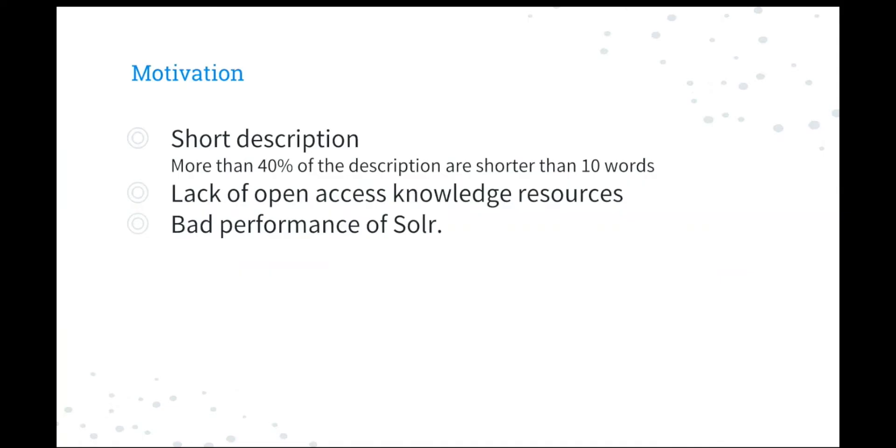So why do we want to do this? Basically, we will do the keyword search on the description of tools. However, the documents can be very short. Up to now, more than 40% of the descriptions in our repository are shorter than 10 words. So it is quite likely that the keywords entered by a user are not inside the document. Thus, the retrieval performance will decrease. One potential way to solve this problem is automatic document and query expansion. However, we cannot find any open access resources that perfectly meet our needs. And our current search system, SOLAR, does not perform well. So we think it is necessary to build our own information retrieval system.